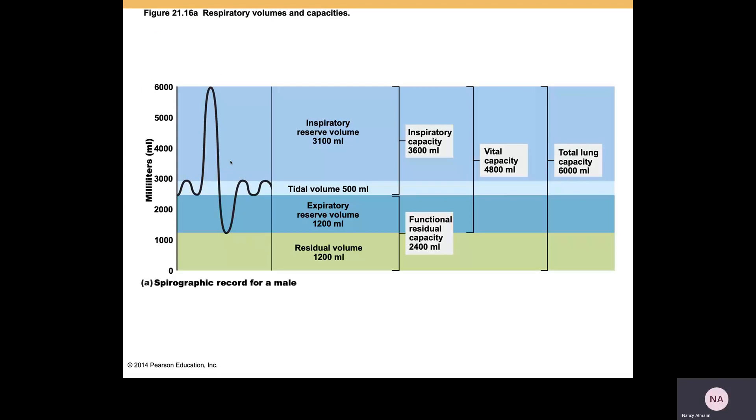I went over this before, right? So when you talk about functional residual capacity, about 2,400 milliliters for a male, residual volume plus expiratory reserve volume. And when you're talking about expiratory reserve volume, you are talking about forced expiration. And when you talk about inspiratory capacity, you're talking about tidal volume and forced inspiration.